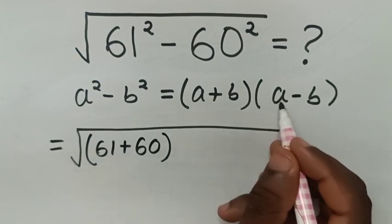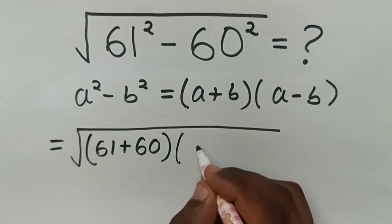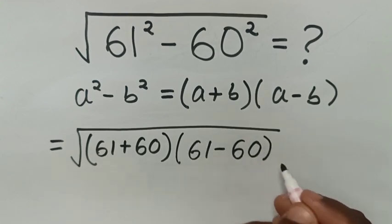Then times a minus b, it will be 61 minus 60. So, 61 minus 60.